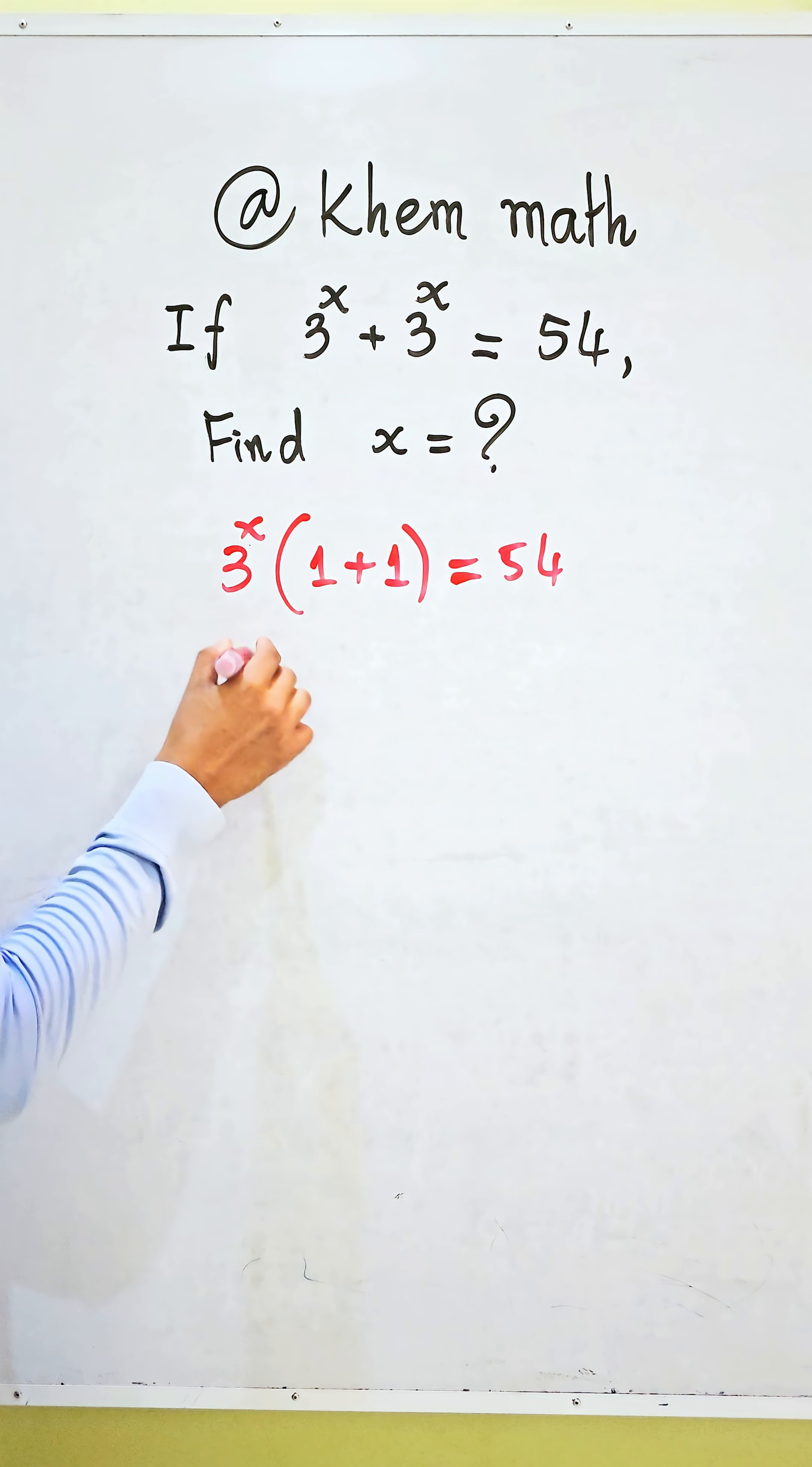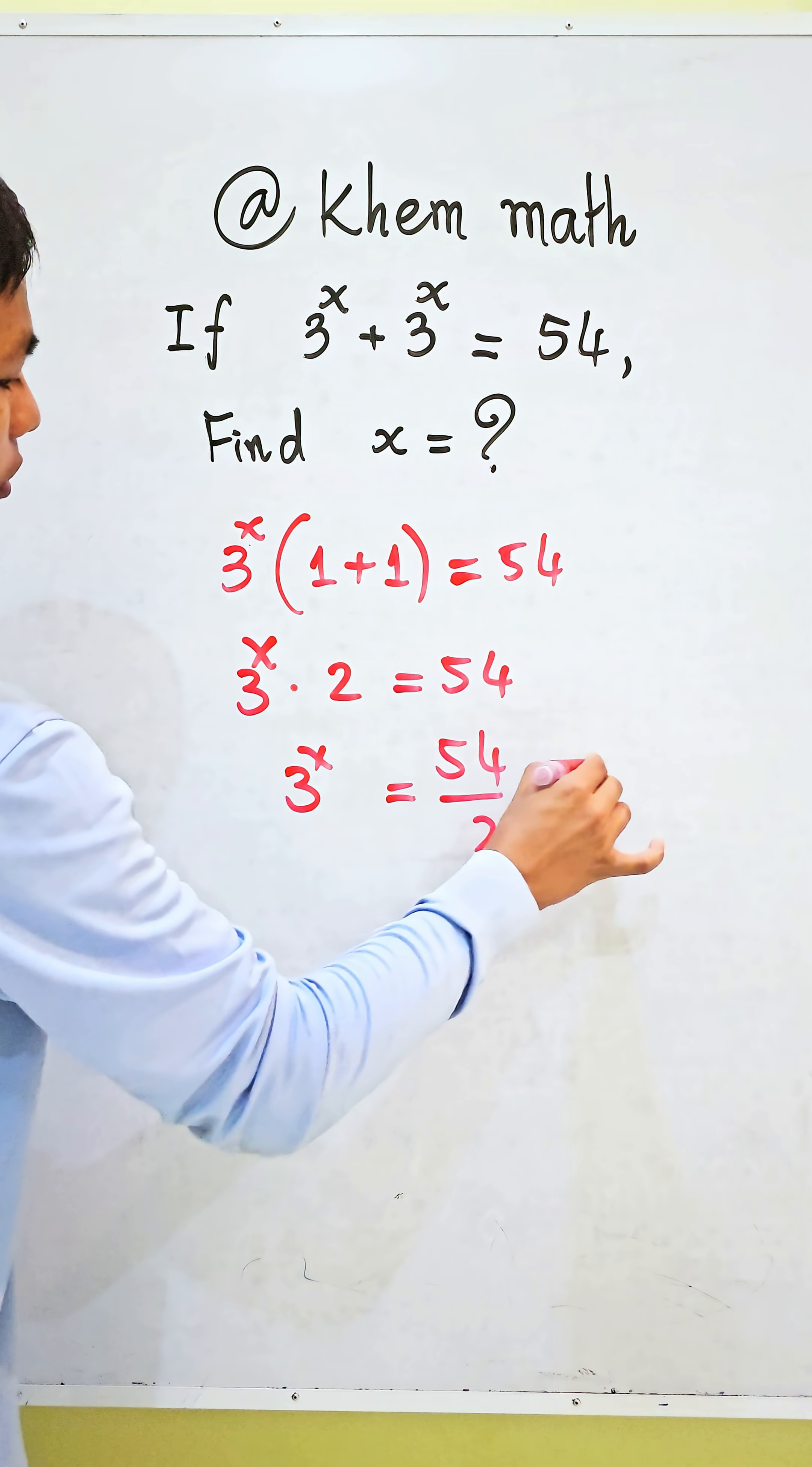We get 3 power of x times (1 plus 1) equals 2, equals 54. We divide both sides of this equation by 2. So we get 3 power of x equals 54 divided by 2, which equals 27.